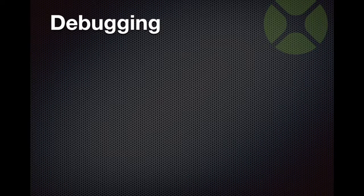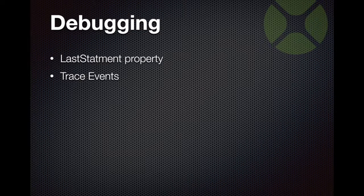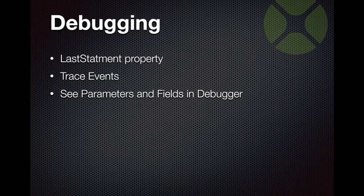To help in debugging, we have a last statement property. Whatever you do, you can always recall the latest statements and see what is happening. Even for SQL commands, we have a plugin-wide SQL log for you. We also have trace events on the classes so you can get an event and log all SQL calls going through. In the debugger, you see all the parameters and fields, which helps you see what is really passed to the database server and what you currently have in the record.